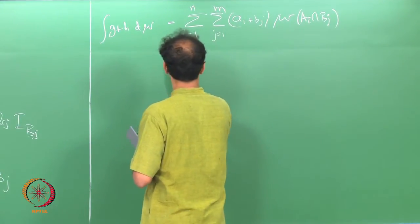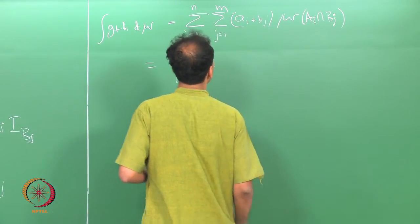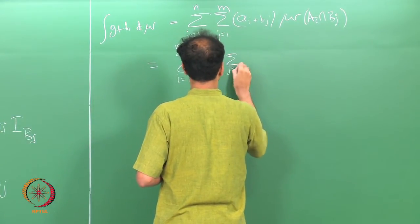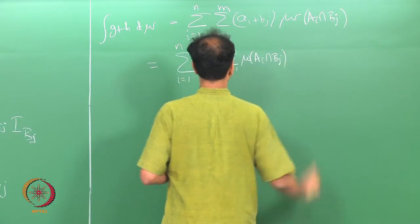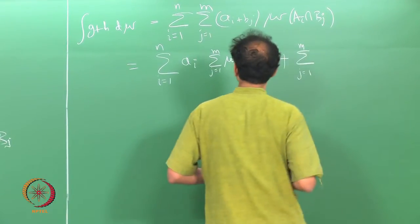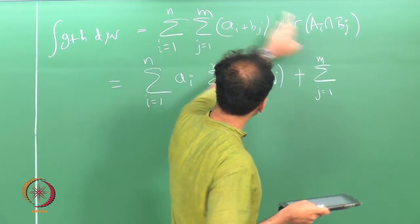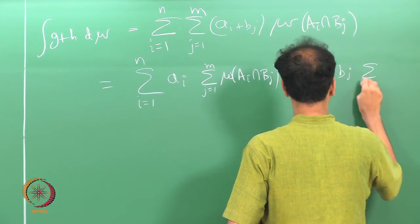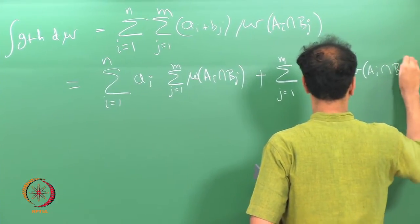I can rewrite this as sum over i from 1 through n of a_i times the sum over j from 1 through m of mu of A_i intersection B_j, plus sum over j from 1 through m of b_j times the sum over i from 1 through n of mu of A_i intersection B_j — that is just algebra.